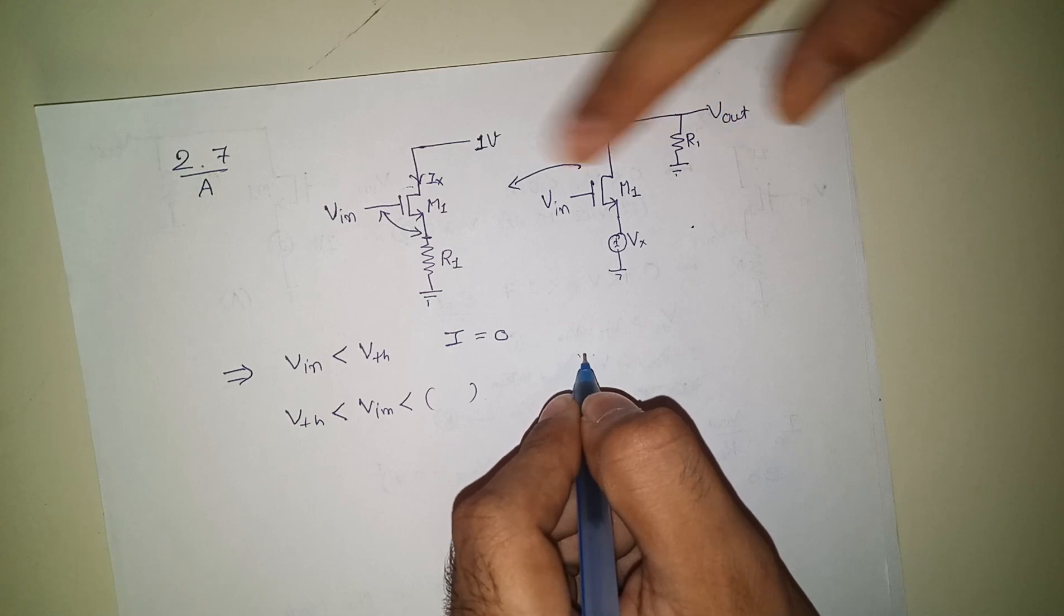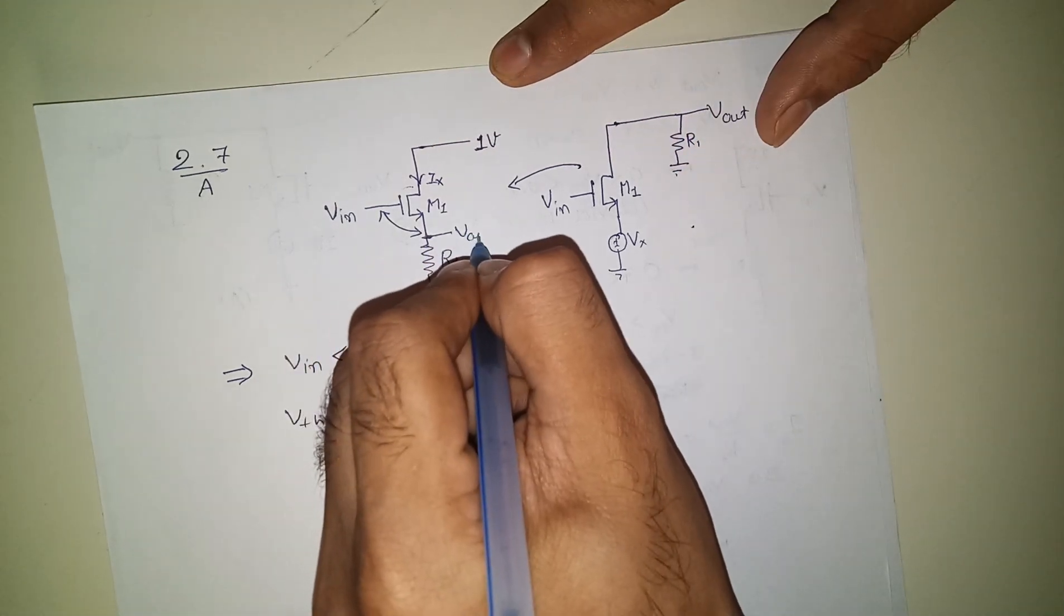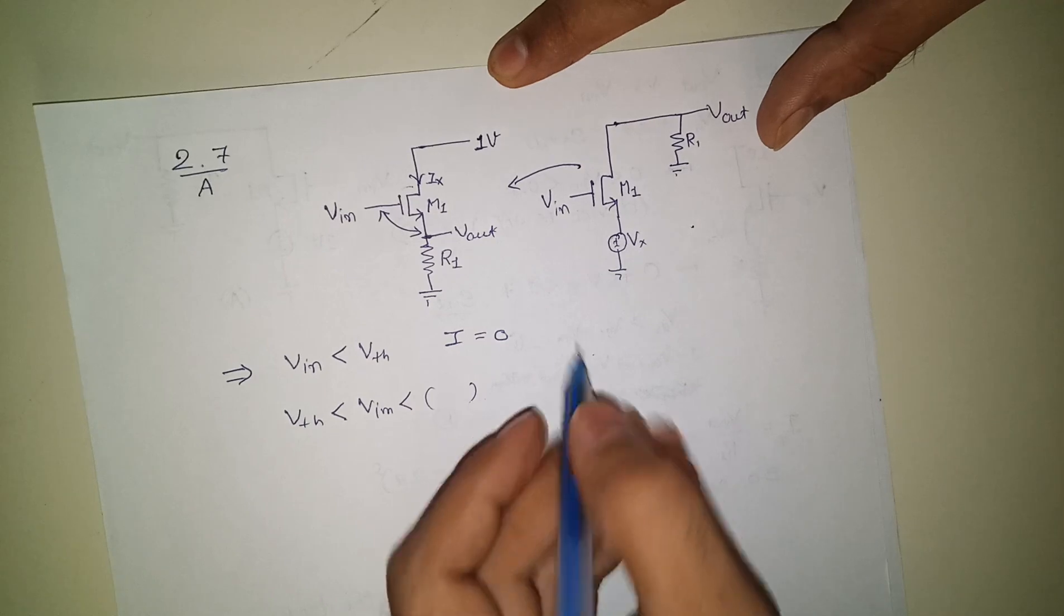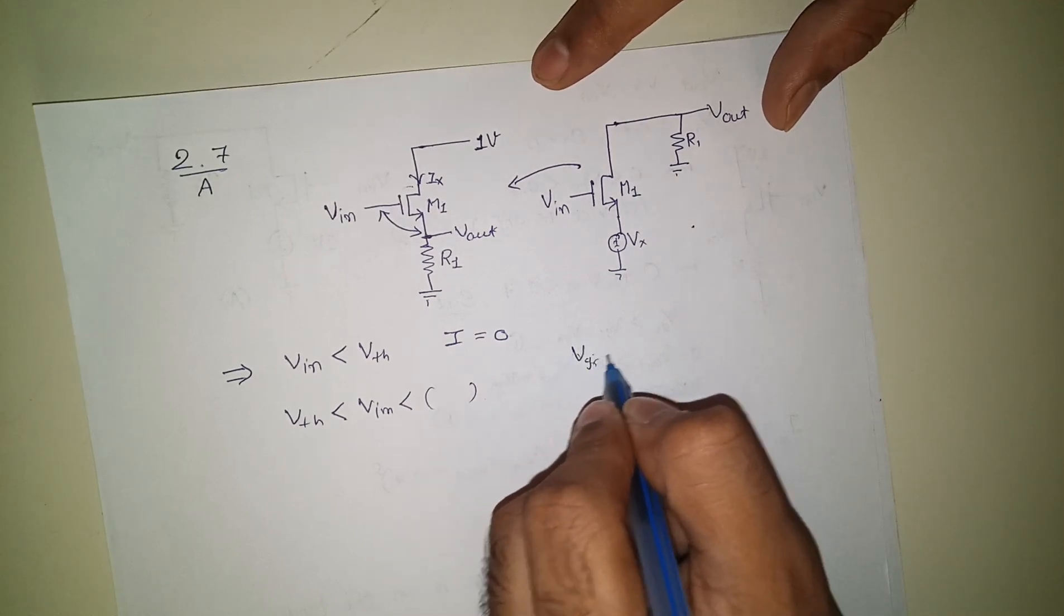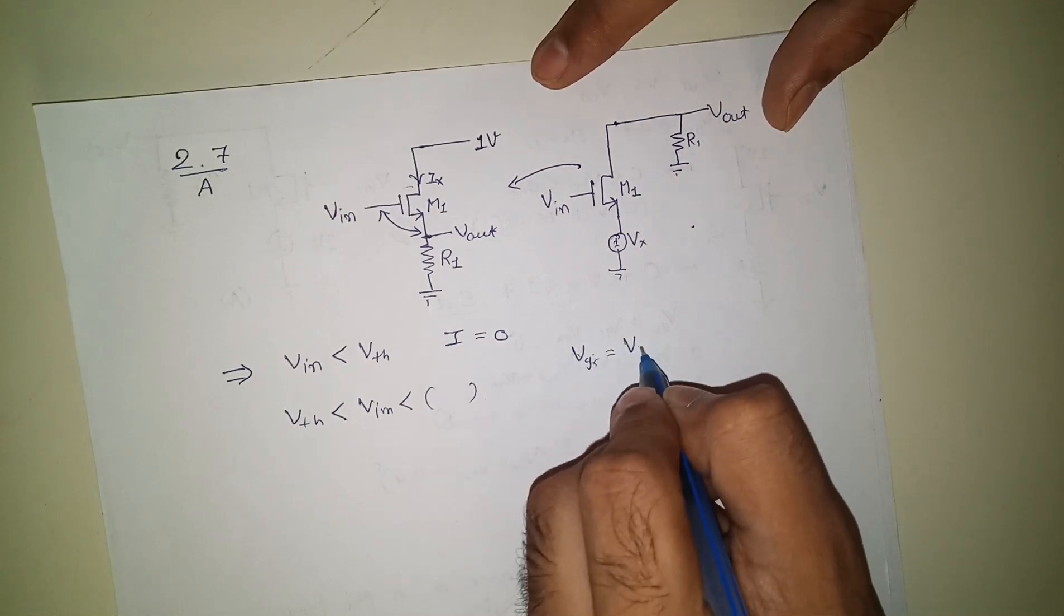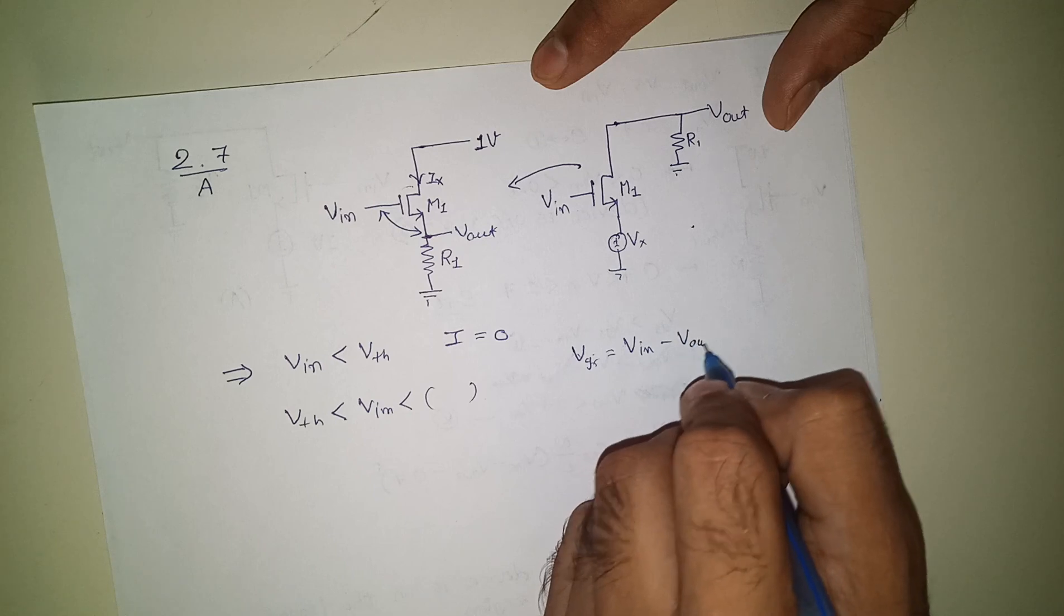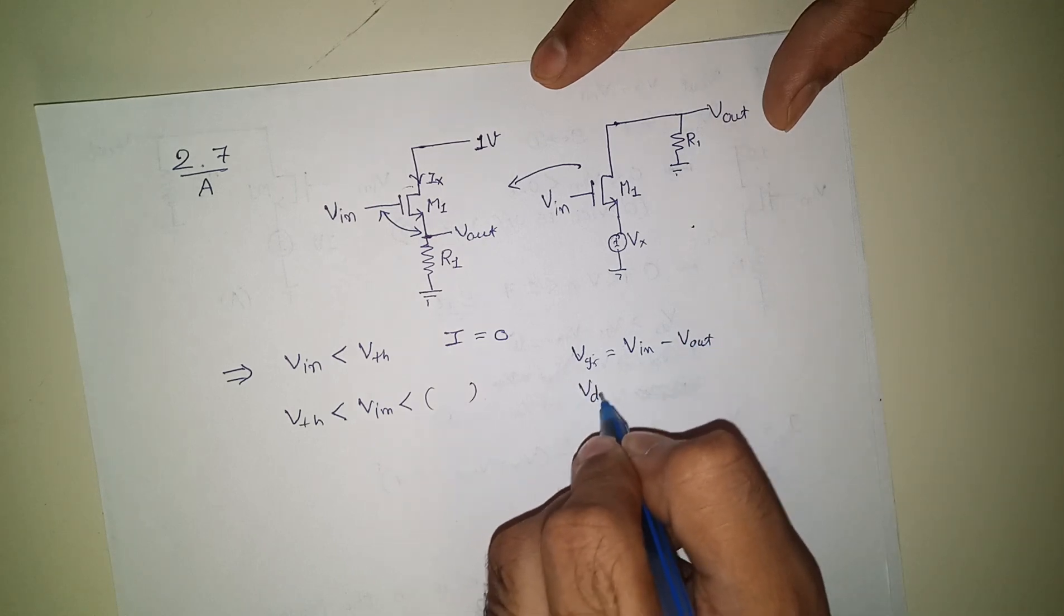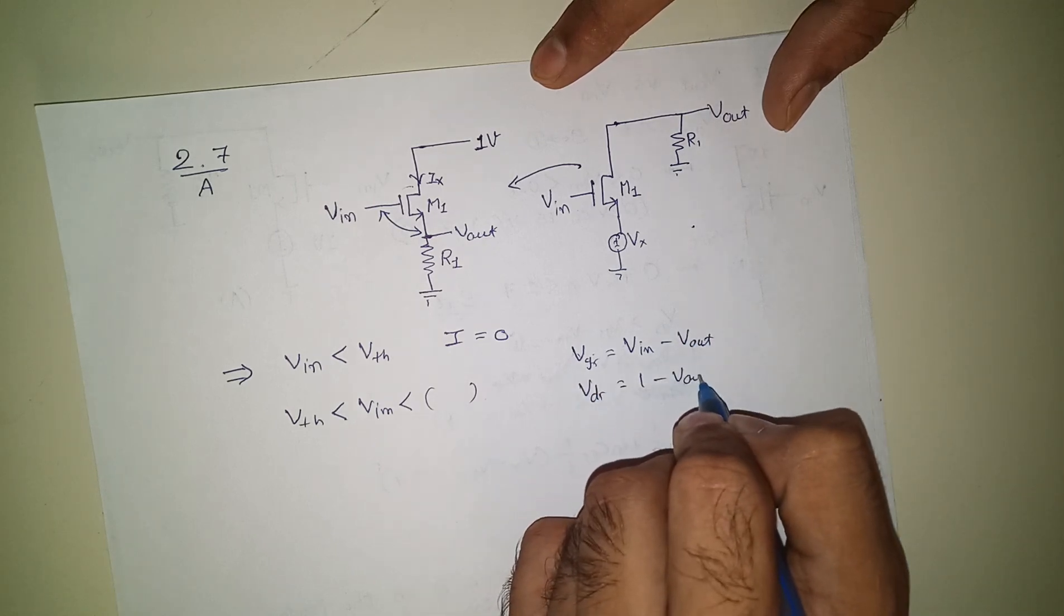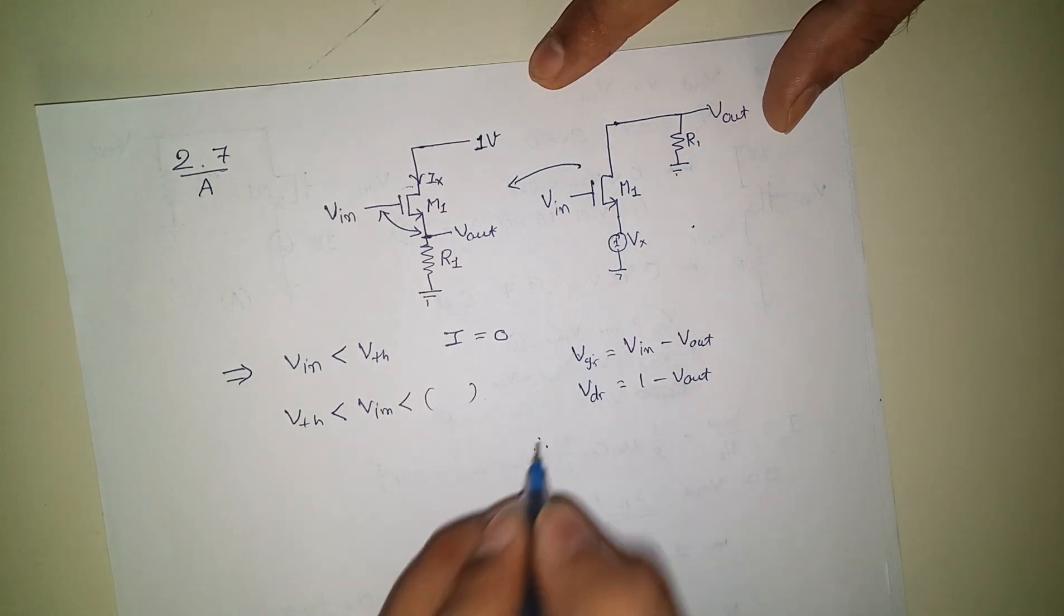So V_GS is V_in minus V_out, and V_DS is 1 minus V_out.